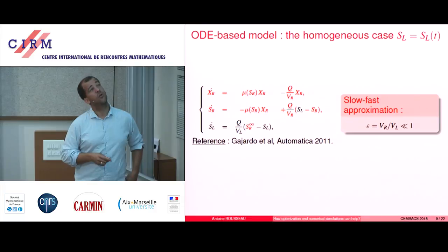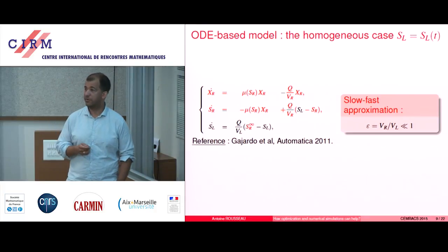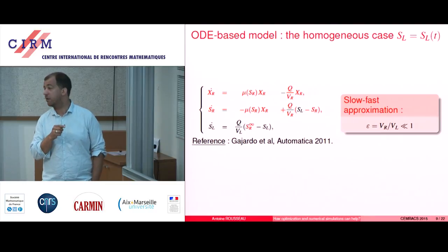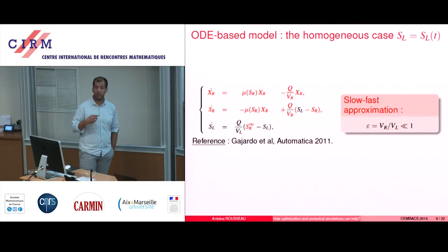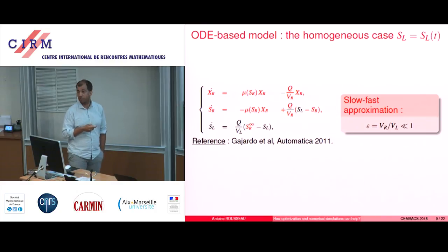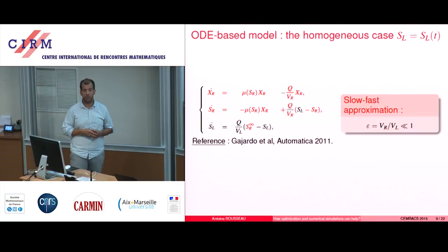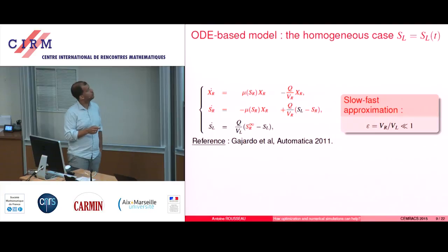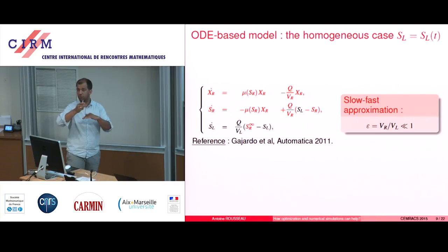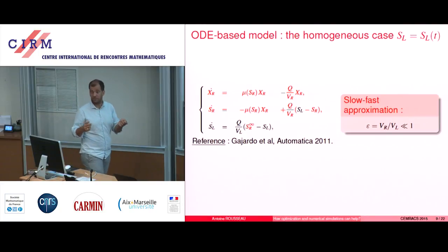What you can do is a slow-fast approximation. It means that the two dynamics in red and black are not going at the same time scales because of the ratio of the volumes. You can understand that things are going much faster in the bioreactor, which is very small compared to the lake that is a big mass of water. So if VR over VL is small, which is reasonably true, then you can split your system into two coupled systems.